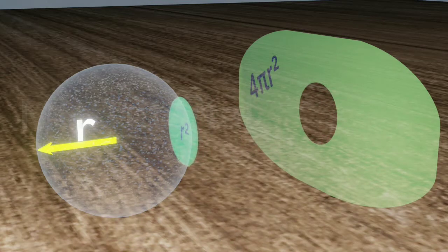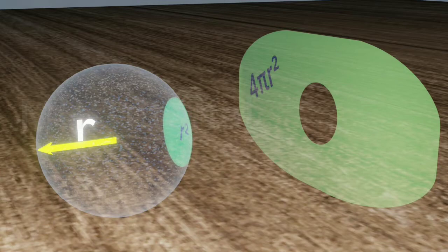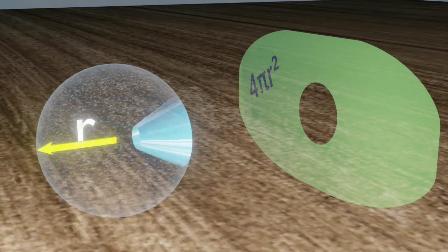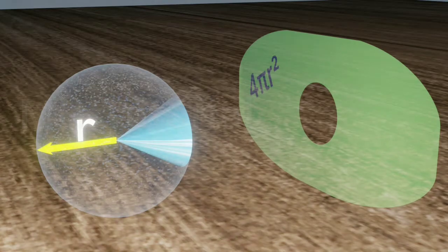Curve it about the sphere. Connect its edges to the center of the sphere. Now you can see the solid angle.